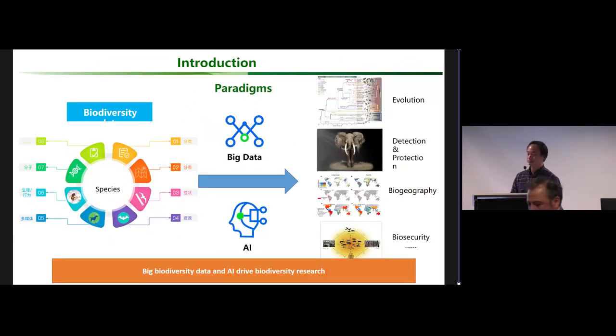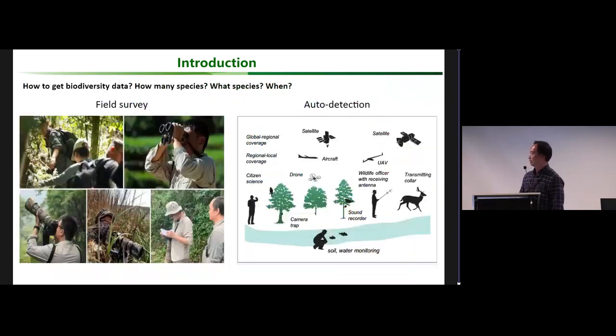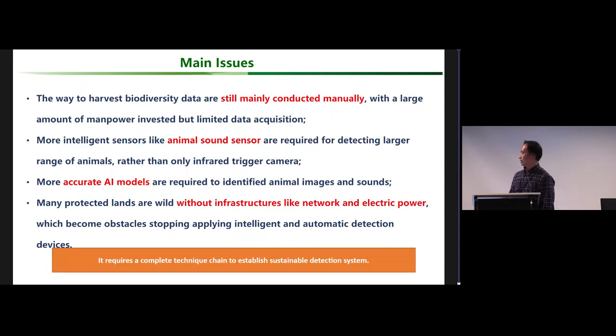Biodiversity data is becoming more and more important, and big biodiversity data and AI are driving the paradigm of biodiversity research. Biodiversity data have to answer the question about how many species we have, what they are, and where we can find them. Field surveys are still important, and some auto-detection elements have been developed, including satellites, aircraft, camera traps, and sound recorders.